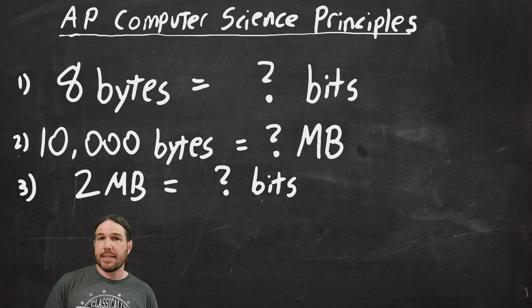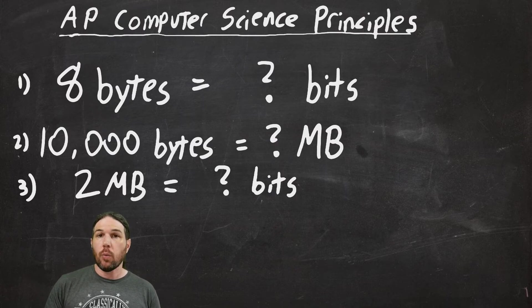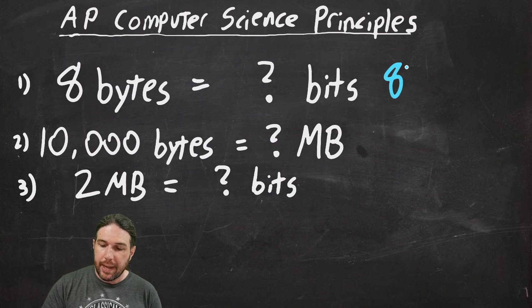Okay. So, eight bytes equals how many bits? Well, we know that every one byte is eight bits. So, if I have eight bytes, that will be eight times eight equals 64 bits.